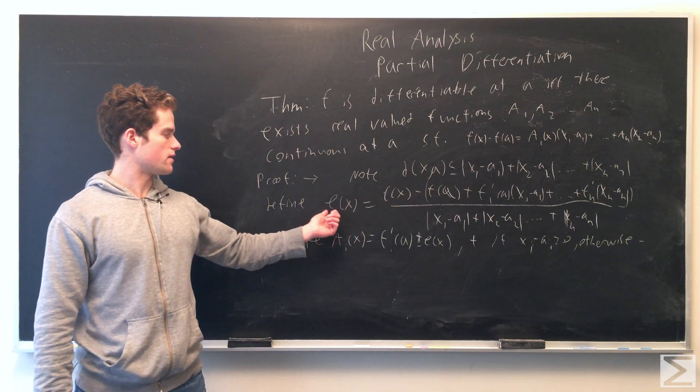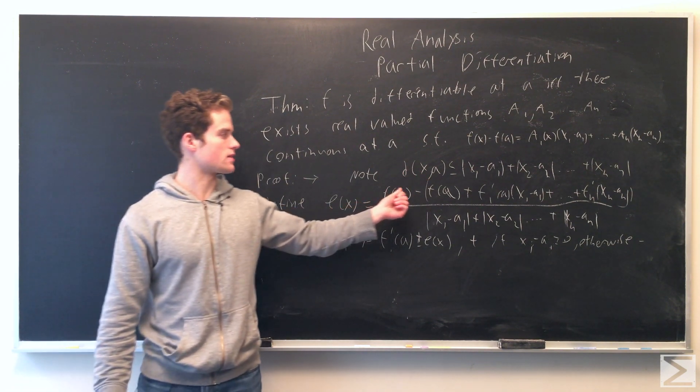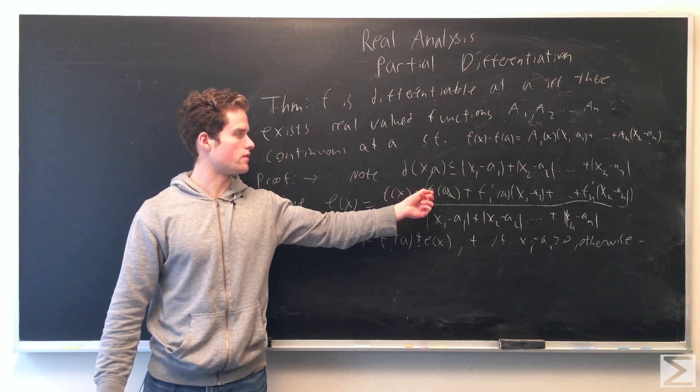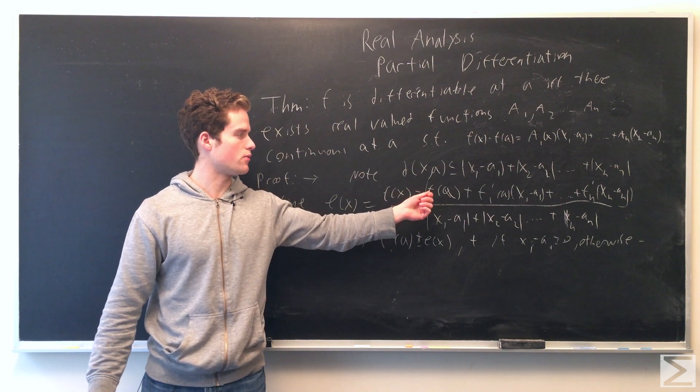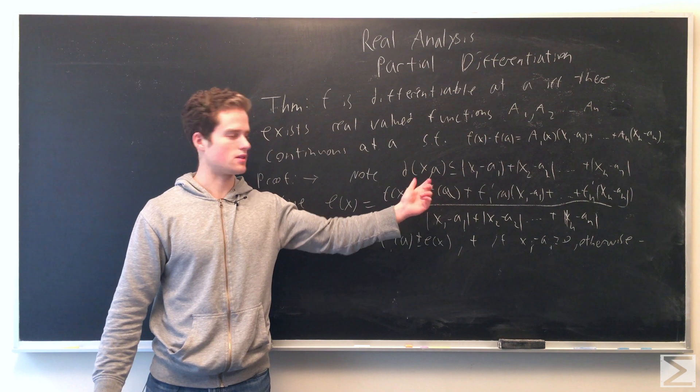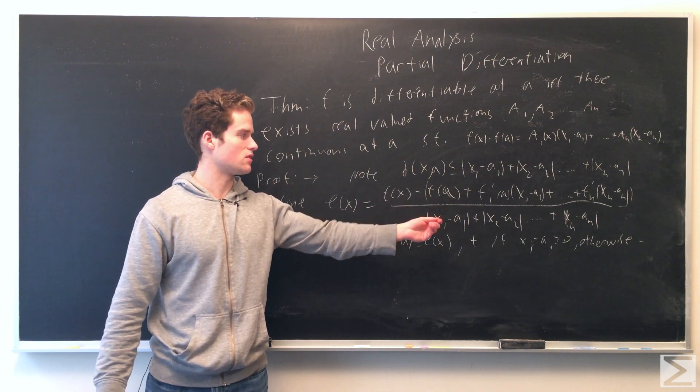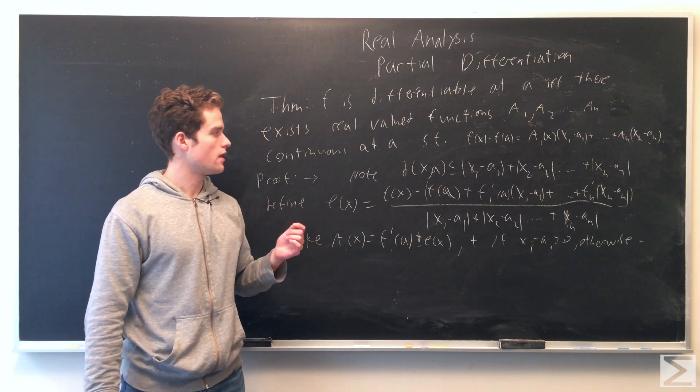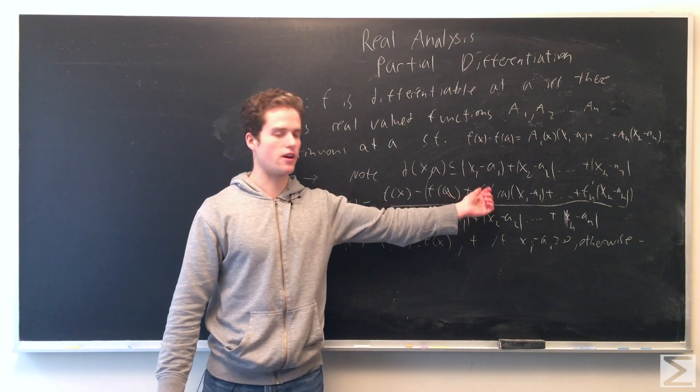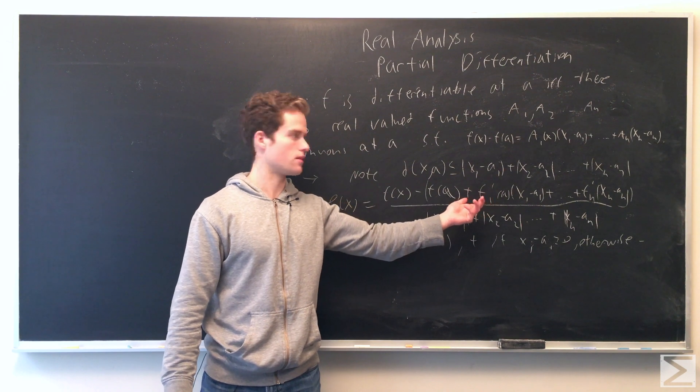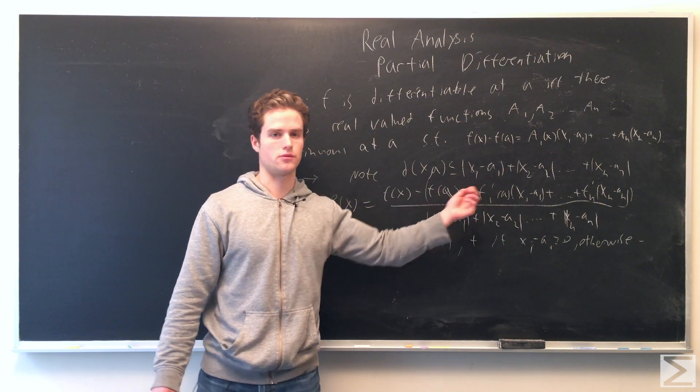We define e(x) as [f(x) - f(a) + f'_1(a)(x_1 - a_1) + ...] over [|x_1 - a_1| + |x_2 - a_2| + ...], where f'_1, f'_2, etc. are our stated constants because we're assuming f is differentiable.